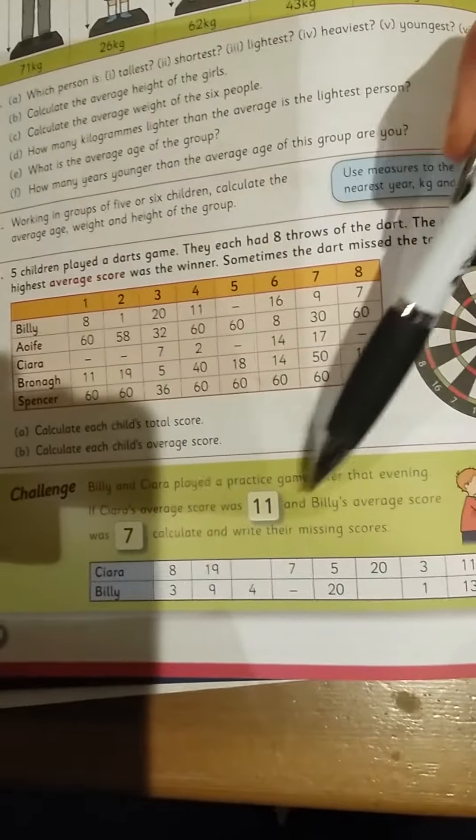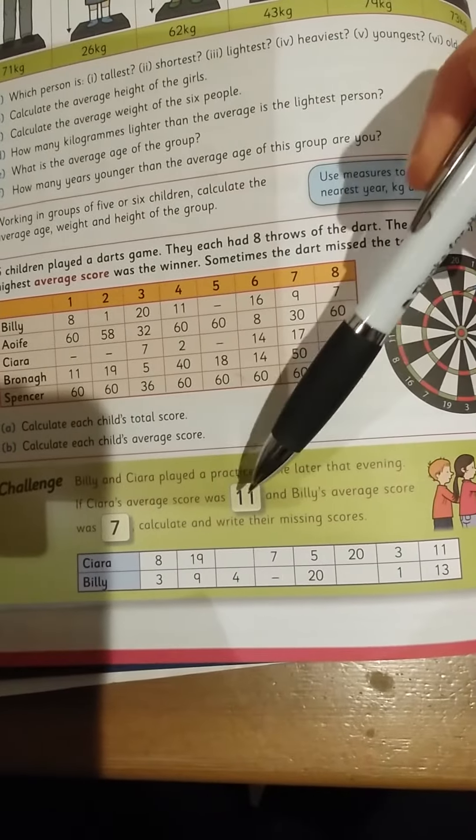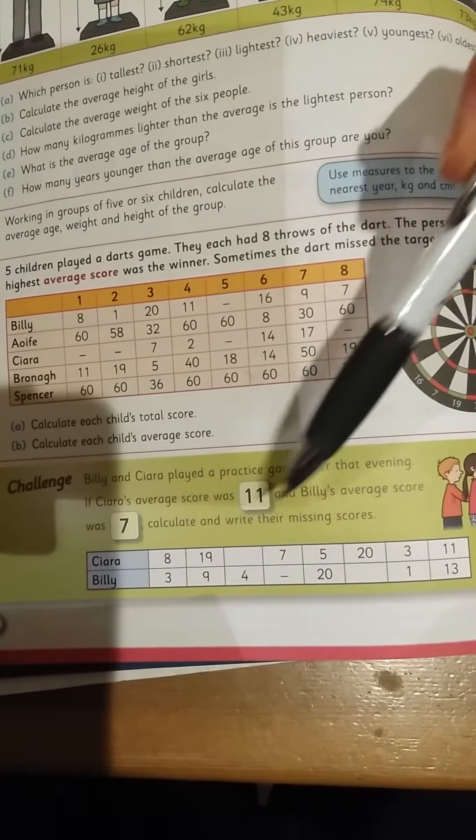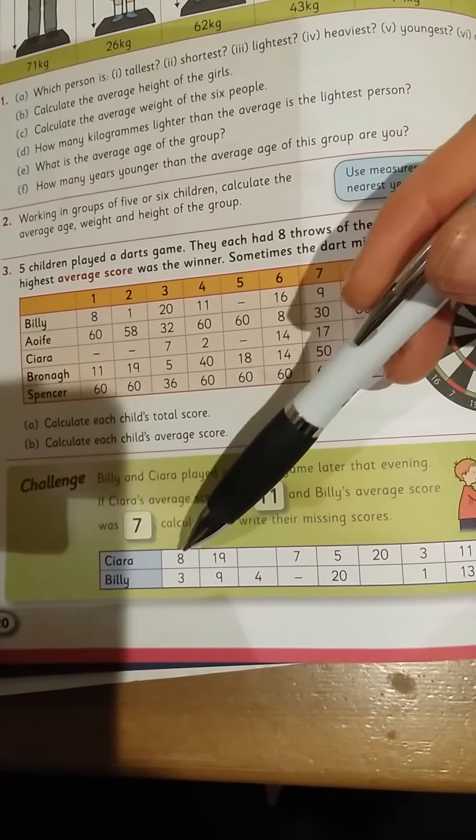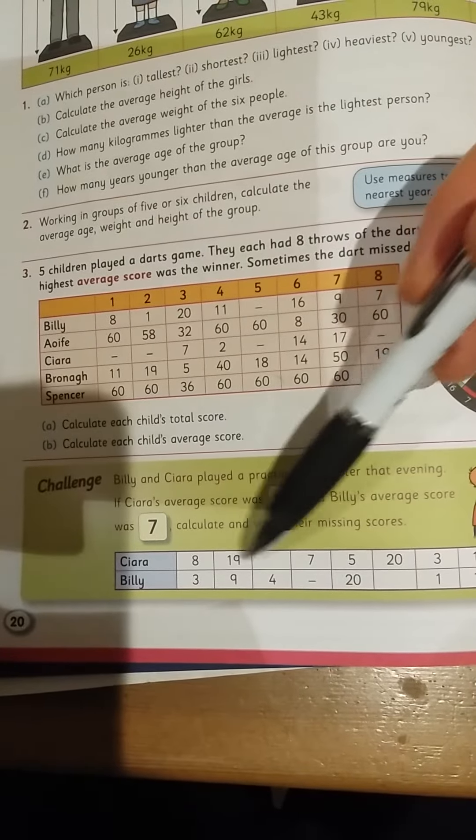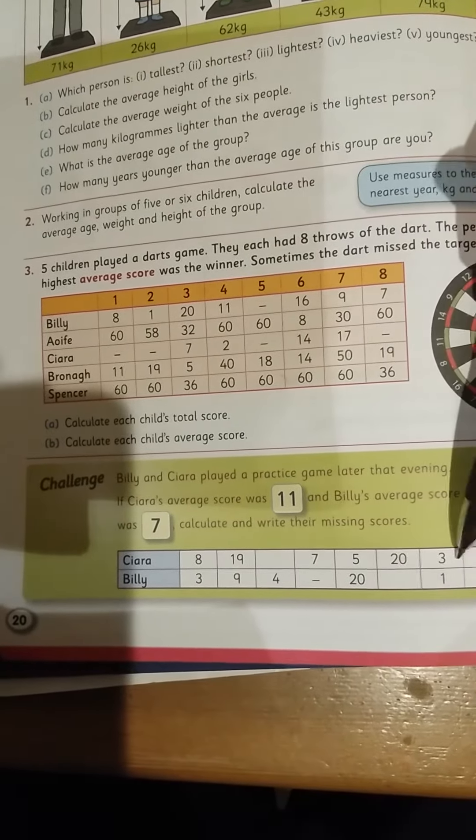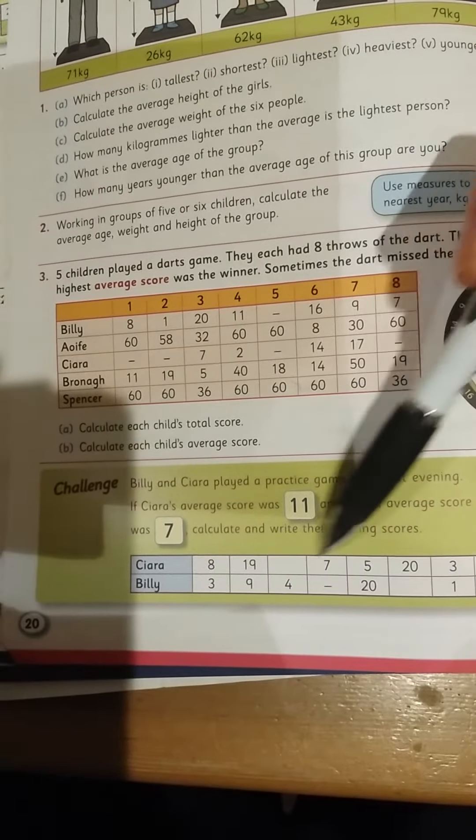And then let's have a go at the challenge here too. In a practice game, Kira's average score was 11 and Billy's average score was 7. Calculate their missing scores. All right, so let's see. Counting the throws: 1, 2, 3, 4, 5, 6, 7... 8 throws altogether.